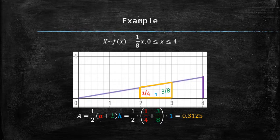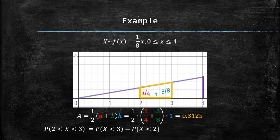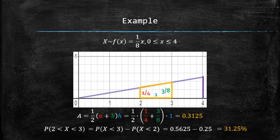Alternatively, we could have used the subdivision rule to compute the same probability as the probability of x being less than 3 minus the probability of x being less than 2, both of which we already computed previously. So the answer is again 31.25%.